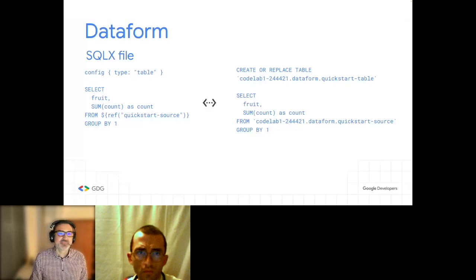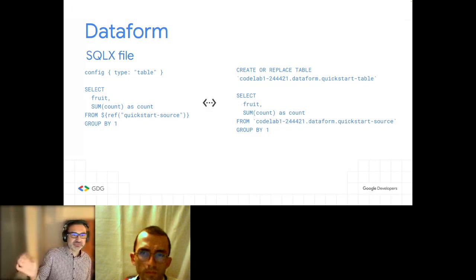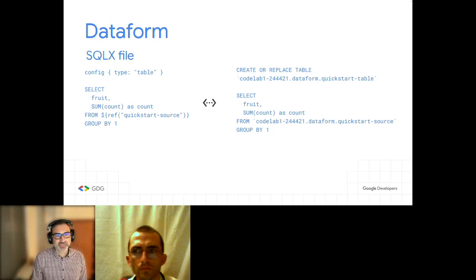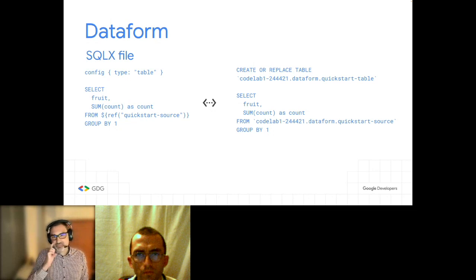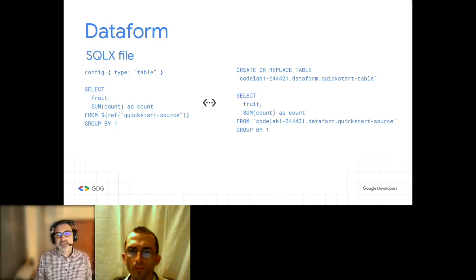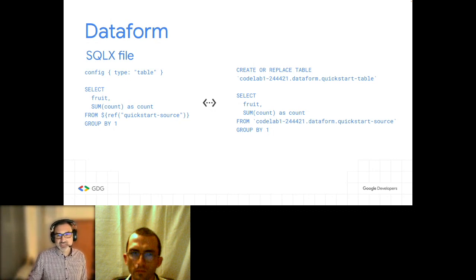To give you an idea of how an SQLX file looks — it's almost the same as SQL. The only difference is a config block at the beginning, which is a set of configuration options you can set there. Based on that, the file is compiled and you get the real SQL syntax that runs against BigQuery — it essentially replaces all the variables, producing exactly the same SQL with variables substituted.